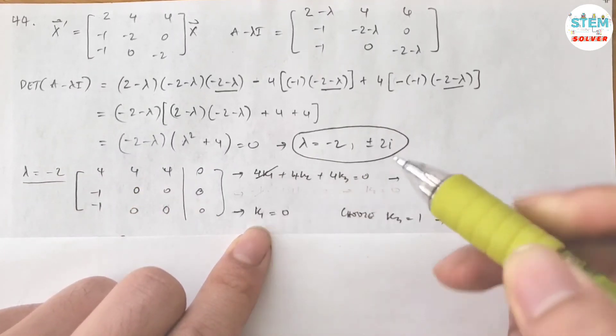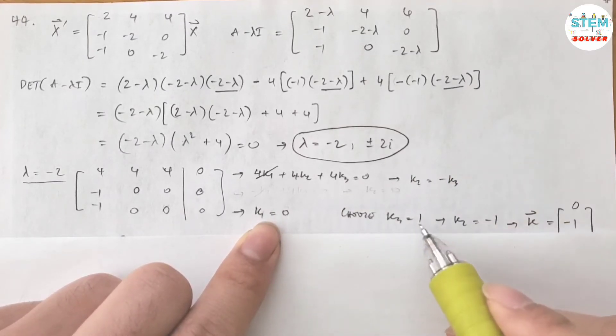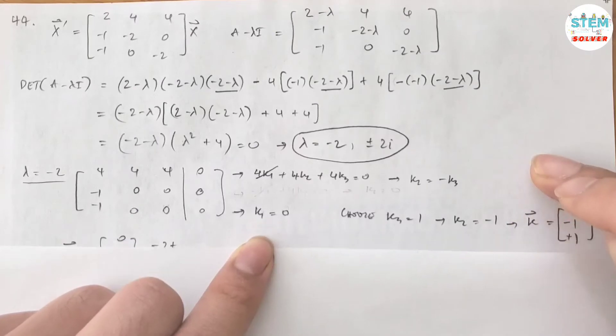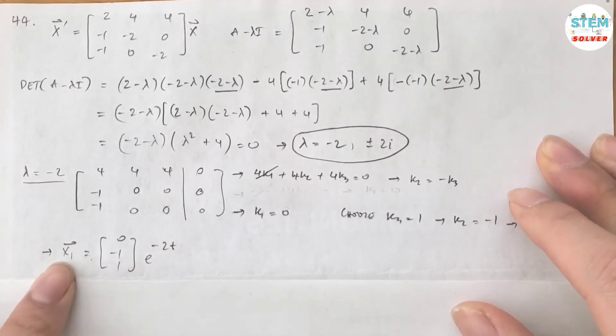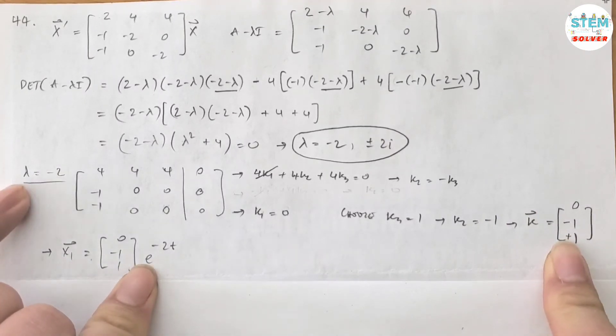And k1 is 0, ignore it. Then solve for k2, I got negative k3. If I choose k3 equals 1, then k2 is negative 1. Then my vector k is 0, negative 1, 1. Then my vector x1 is vector k times e to the negative 2t as lambda equals negative 2.